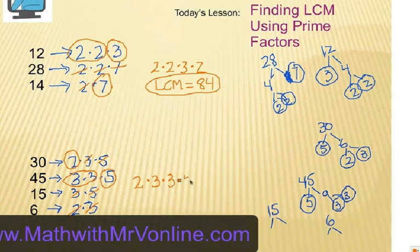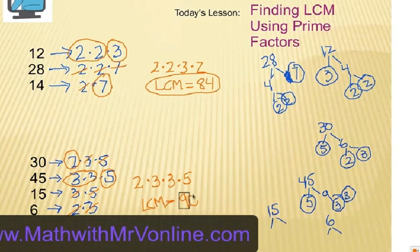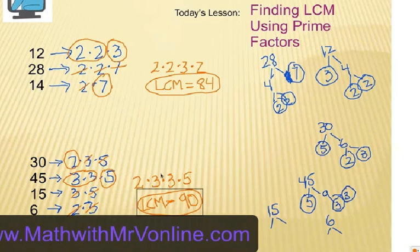Now I put all of it together — that's multiplication — so I multiply those 4 numbers together, and that gives me the least common multiple of those 4 original numbers. 2 times 3 is 6, 6 times 3 is 18, 18 times 5 is 90. So 90 is the smallest number that contains all the factors of 30, 45, 15, and 6. This is LCM using prime factors. Thanks for watching.